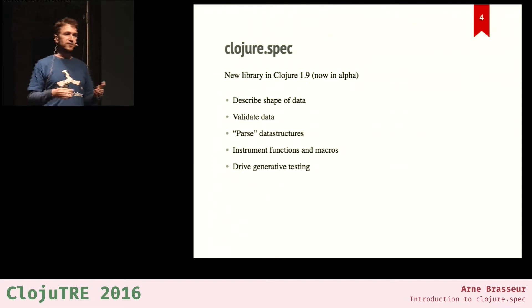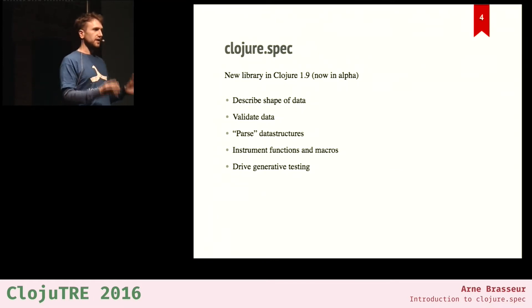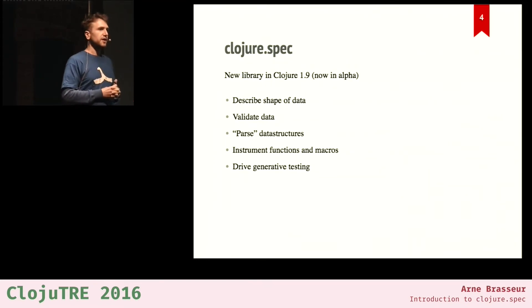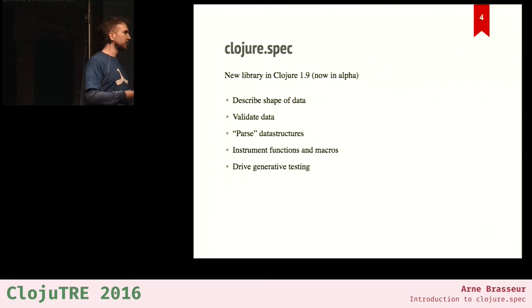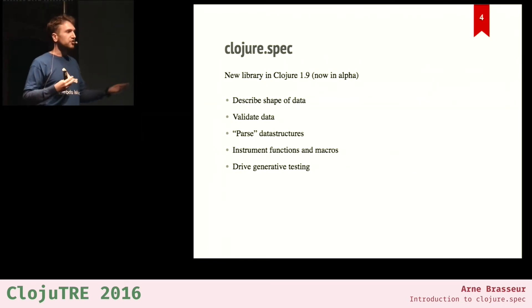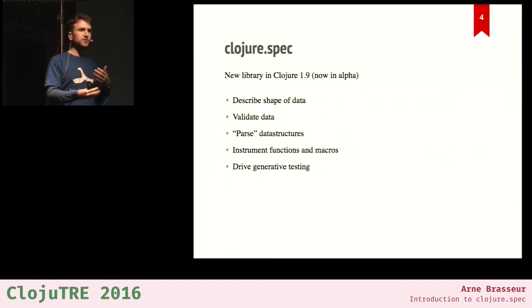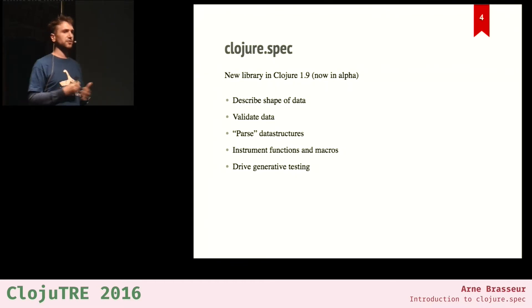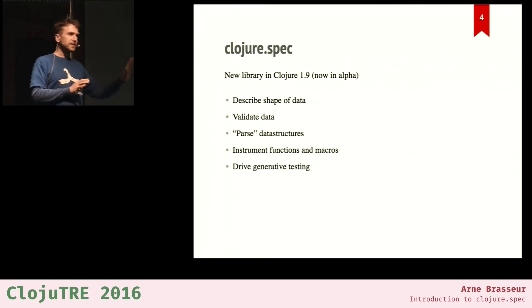You write specs describing what your data is supposed to look like, and then you can do several things. The obvious one is to validate your data. Then there's what is called conforming — a way of shaping or parsing data into a more minimal form for processing. You can instrument functions and macros to get checks during development. And finally, you can generate data based on specs, which you can use to drive generative testing.